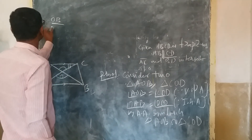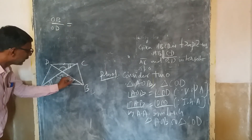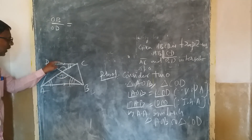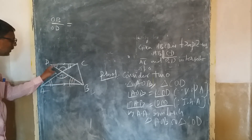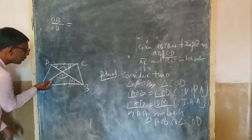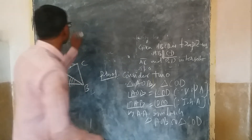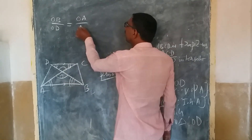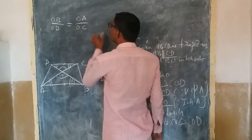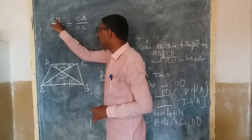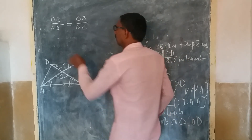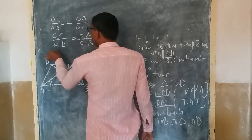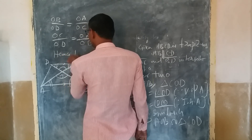Now, triangle AOB is similar to triangle COD. Therefore, OA by OC is equal to OB by OD. Hence proved. Simple.